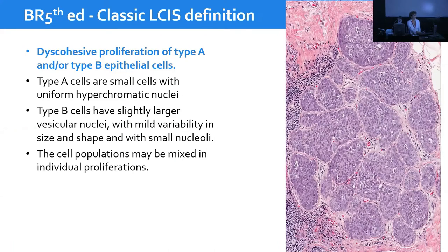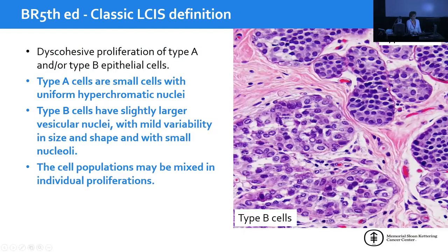Classic LCIS is defined as a discohesive proliferation of type A or type B epithelial cells. Type A cells are small cells with uniform hyperchromatic nuclei; nucleoli are rarely visible. Type B cells are slightly larger with a slightly larger vesicular, more open nucleus with more open chromatin. They have mild variability in size and shape, and these two cell populations may be mixed in individual proliferations.